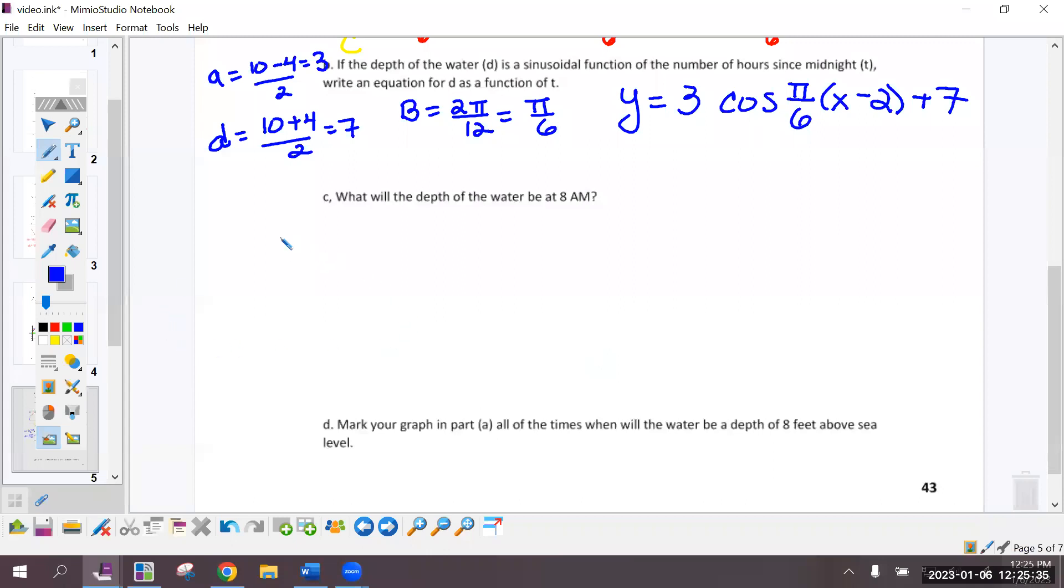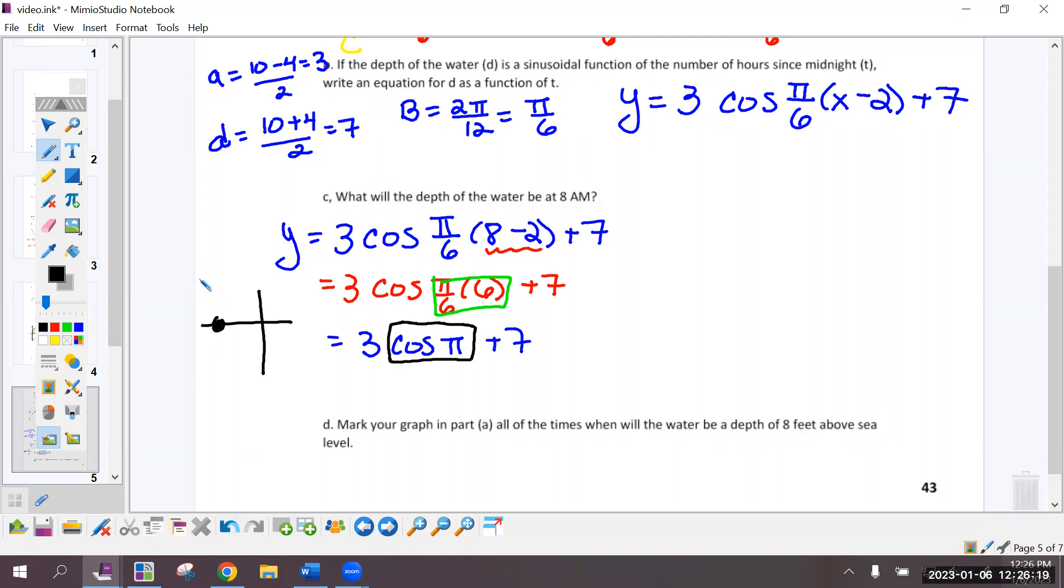What is the depth of the water at 8 a.m.? So 8 is our x. I'm going to plug in 8 for x. And to evaluate this, I'm going to start on the inside and work my way out. So we've got 8 minus 2 is 6. And I'm going to multiply these together. I get pi. And then I have to evaluate cosine of pi. So I'm going to think back to our circle, our prior unit. Pi is over here. I like a radius of 1. So that's left 1 of 0. Cosine is x over r. So that's negative 1 over 1. 3 times negative 1 plus 7 gets the answer of 4 feet.